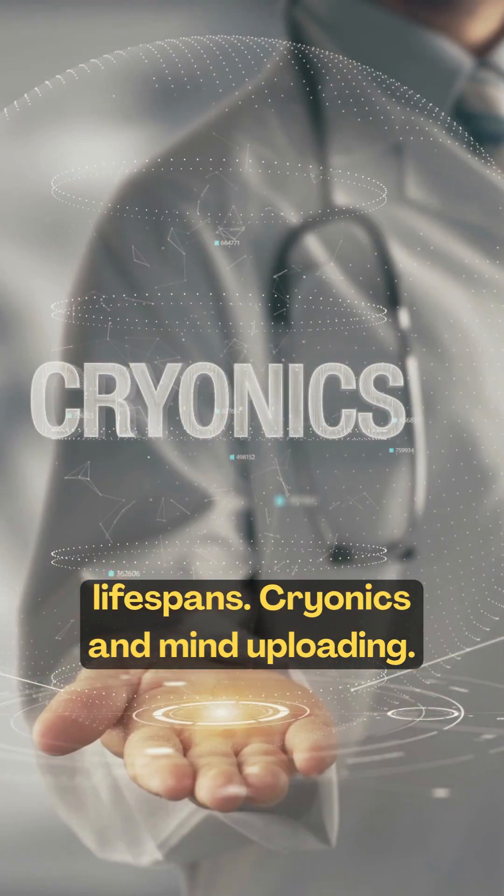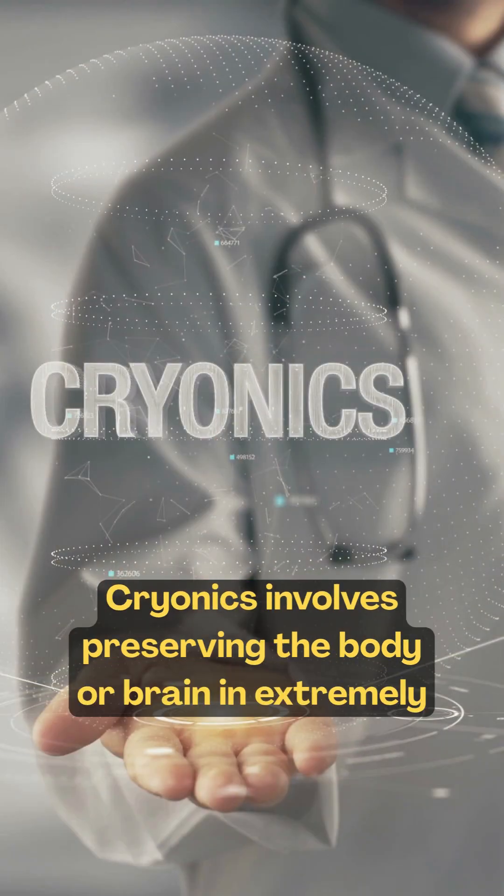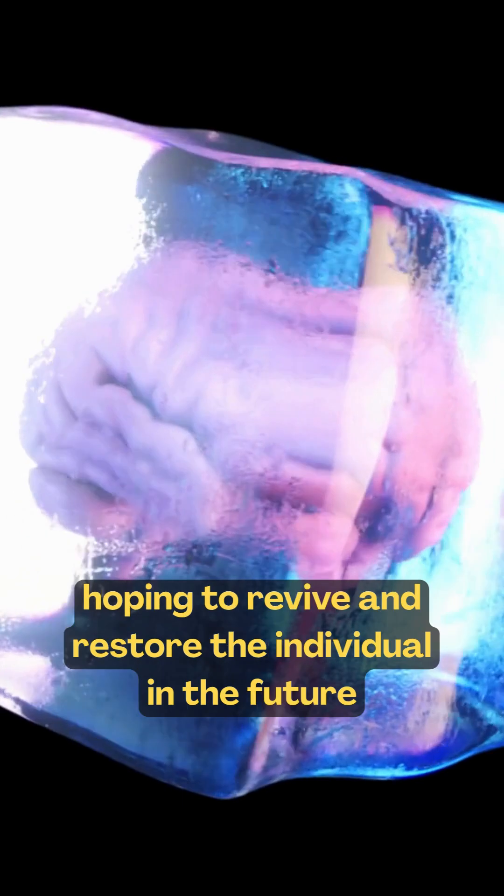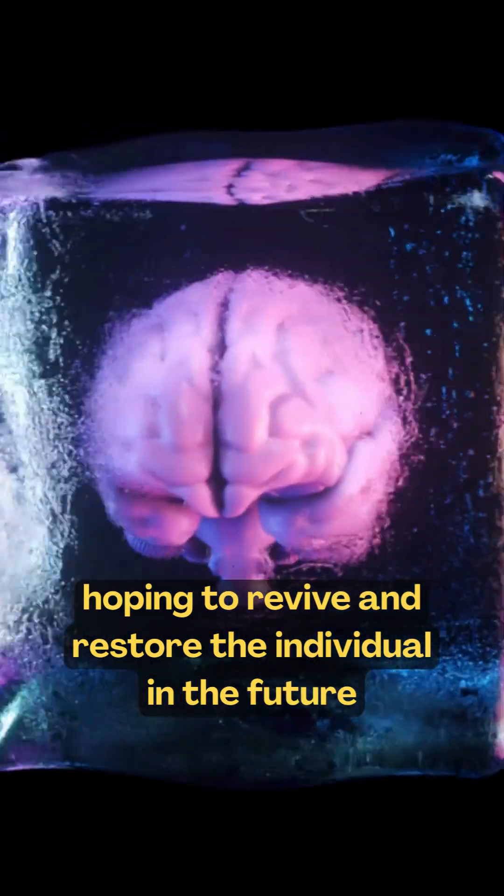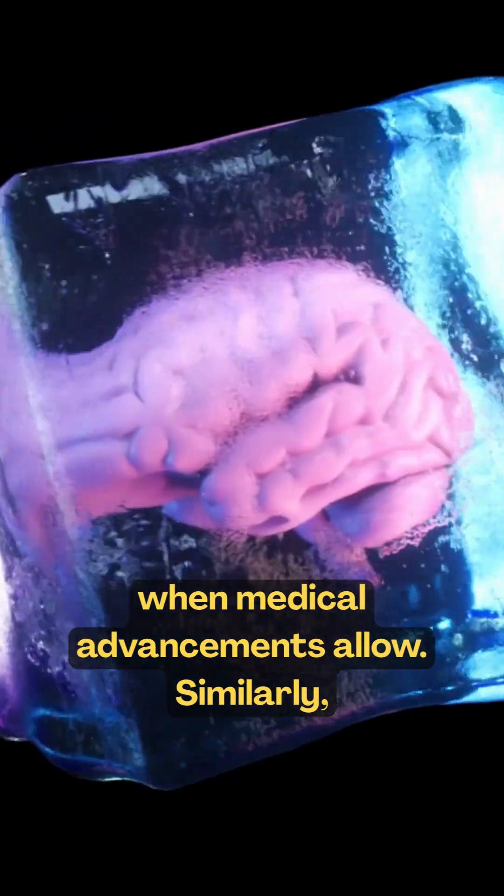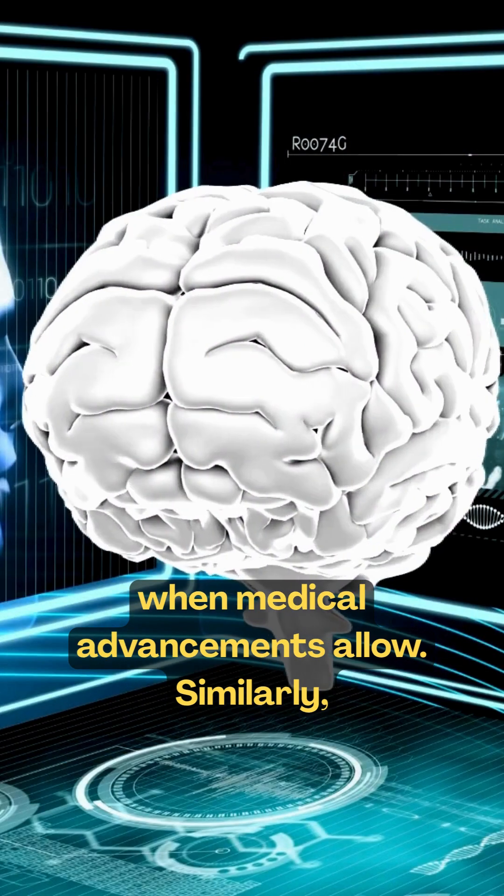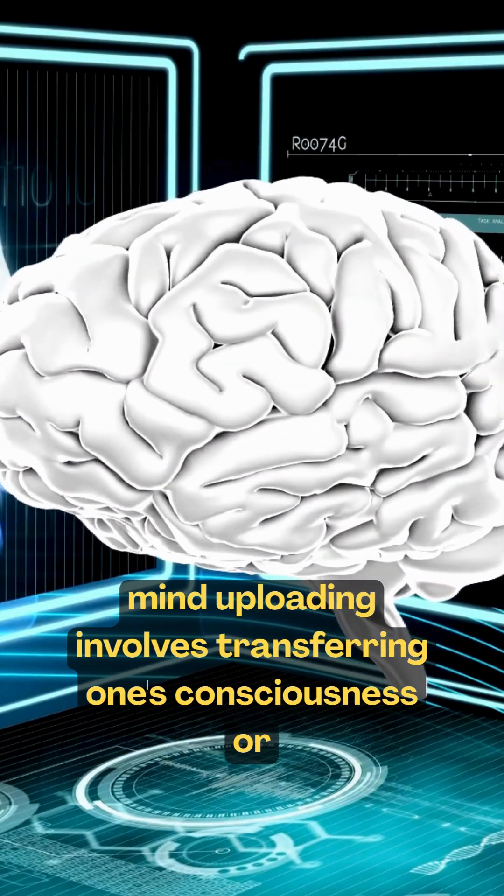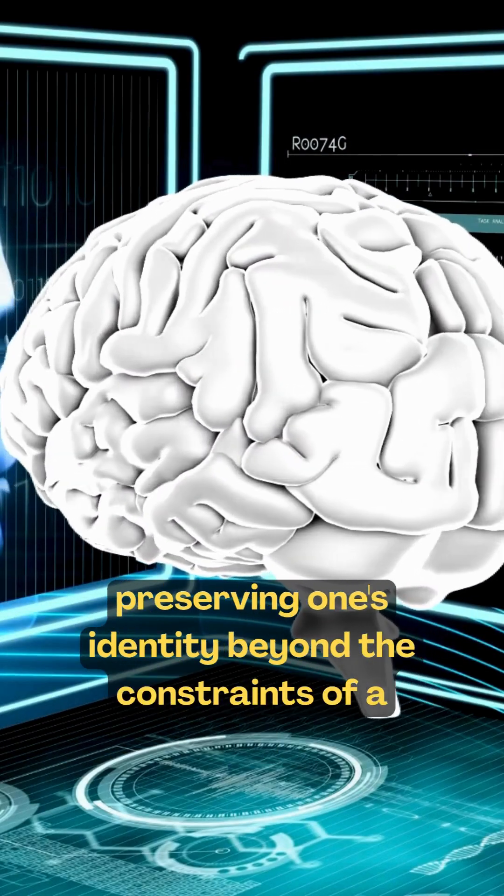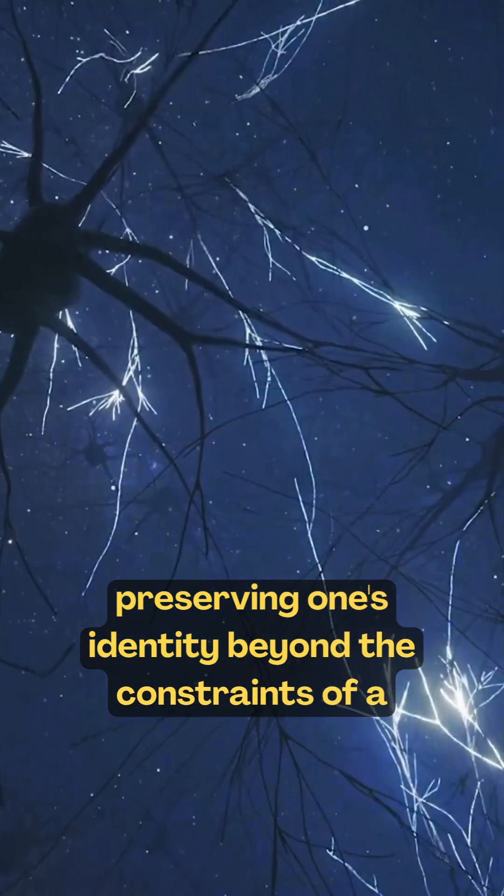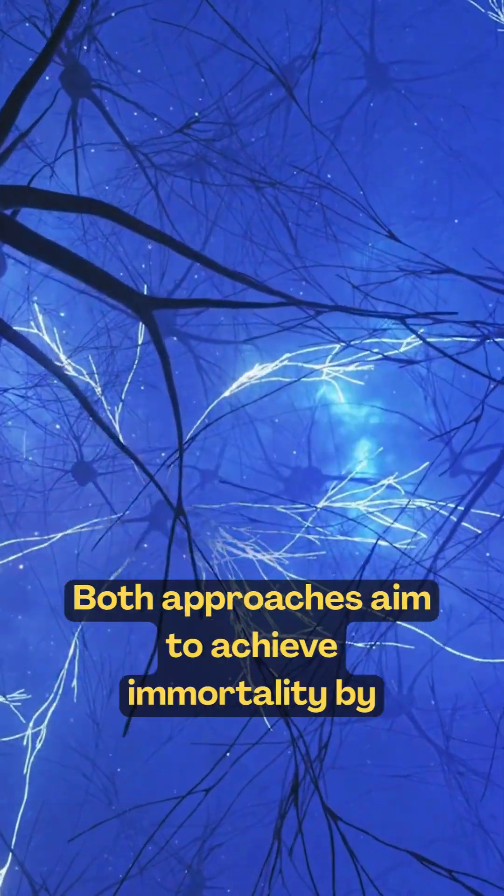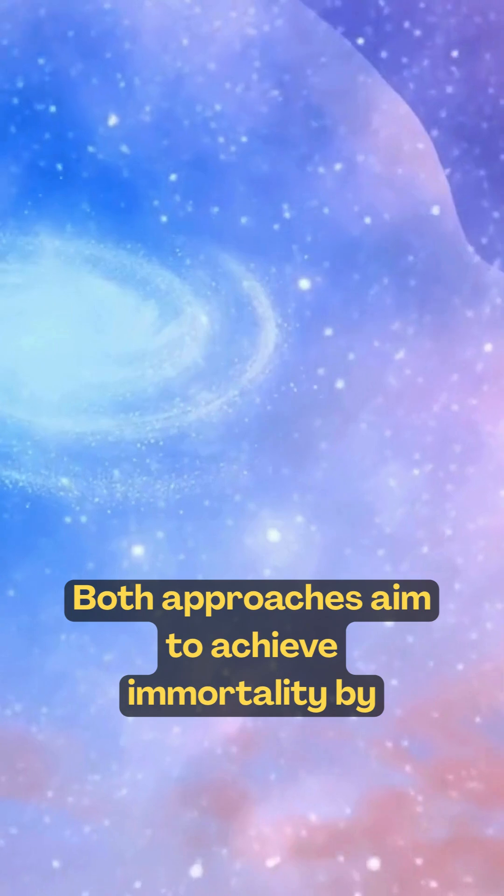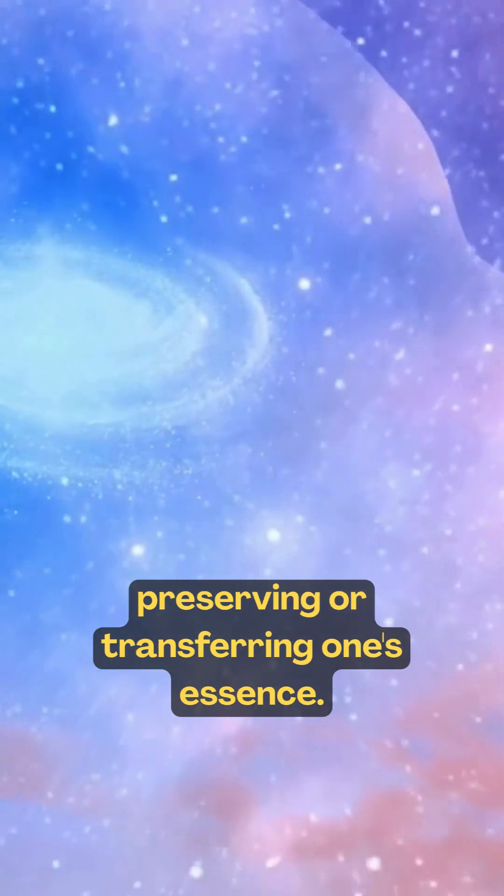Cryonics and mind uploading. Cryonics involves preserving the body or brain at extremely low temperatures after death, hoping to revive and restore the individual in the future when medical advancements allow. Similarly, mind uploading involves transferring one's consciousness or memories into a digital format, preserving one's identity beyond the constraints of a physical body. Both approaches aim to achieve immortality by preserving or transferring one's essence.